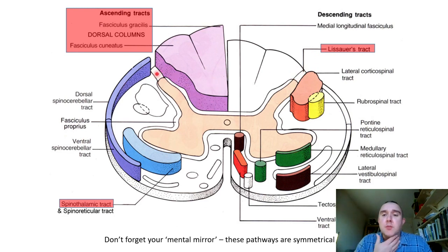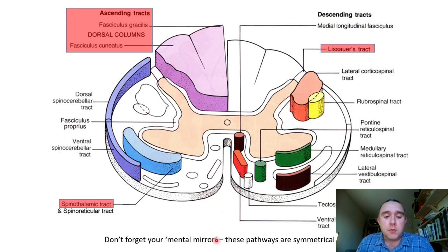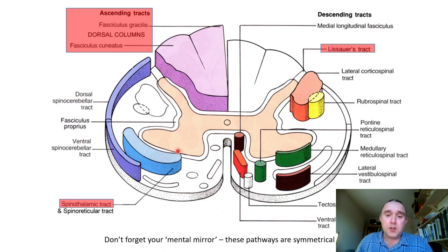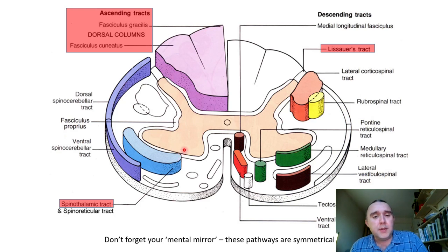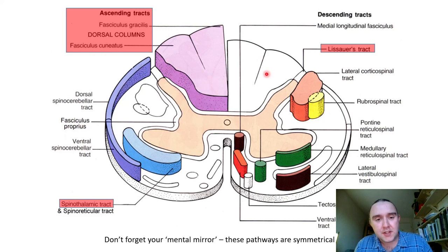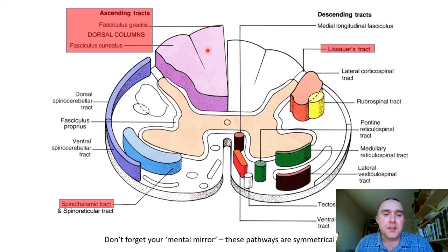Lissauer's tract is a small pathway enabling first-order axons to ascend a couple of segments before synapsing. Now, as stated at the bottom of this slide, you've always got to remember that if we depict something on one side in the spinal cord, it is present on the other side as well. So you've always got to use what I call a mental mirror. The dorsal columns are present on both sides, and generally in this figure sensory pathways are on the left and motor pathways on the right.